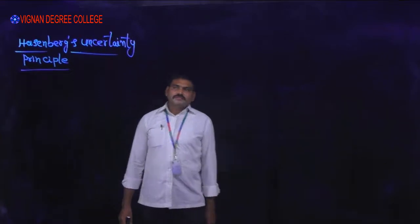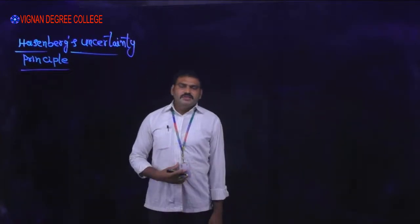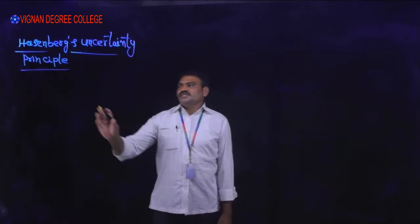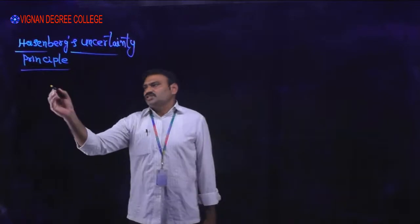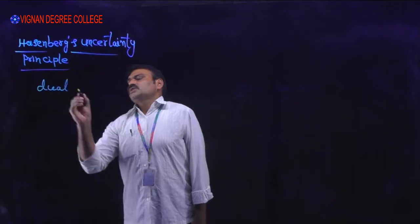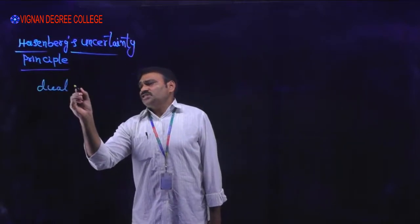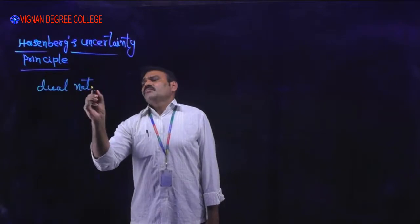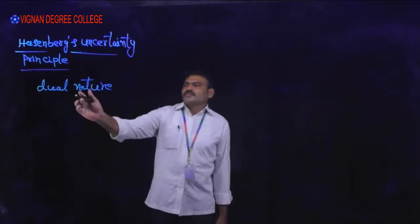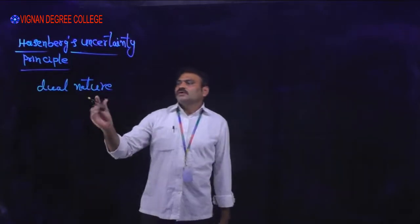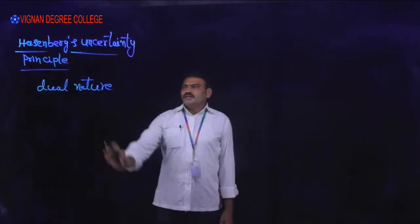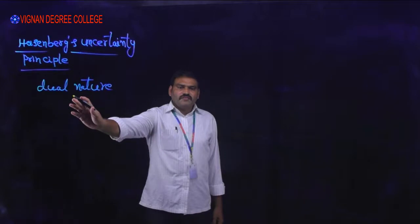Dual nature means a particle exhibiting both particle nature and wave nature. Radiation exhibits particle nature and wave nature — this is known as dual nature. Heisenberg's Uncertainty Principle is the direct consequence of the dual nature of matter.